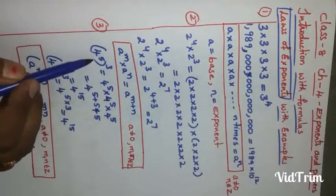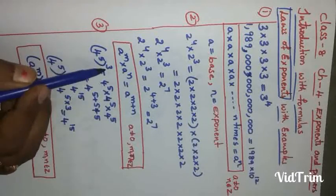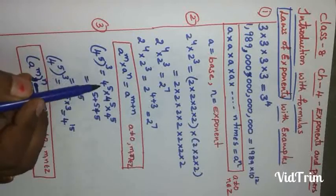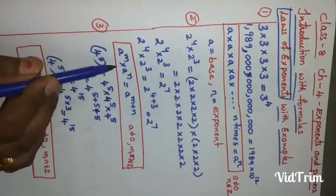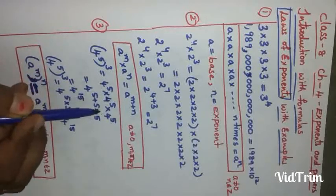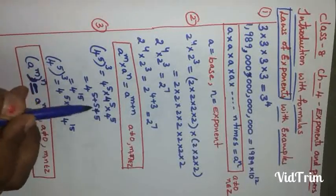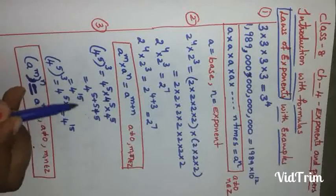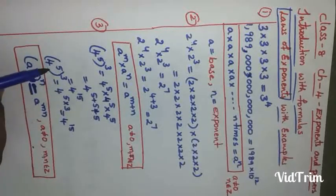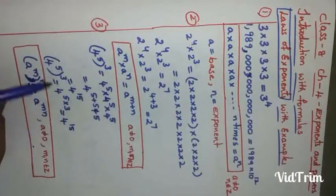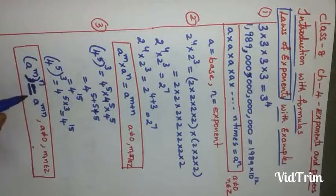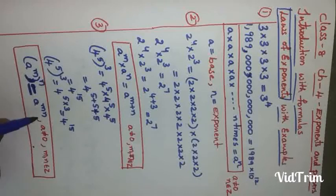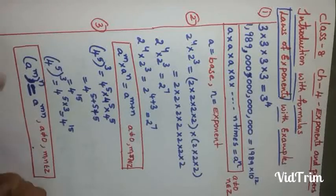Coming to the third formula: 4 to the power of 5, whole to the power of 3. The whole power means 4^5 is repeated 3 times. Like the previous formula, when bases are same, powers are added. The base is 4 and the power 5 is repeated 3 times, so 5 multiplied by 3 gives 15. Therefore (4^5)^3 = 4^15. The general formula: (a^m)^n = a^(m×n). Here also a ≠ 0, and m, n belong to integers Z.